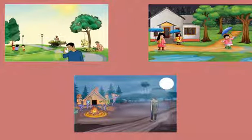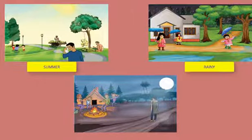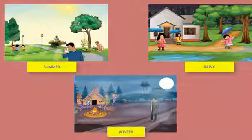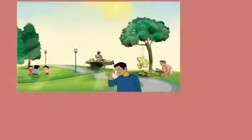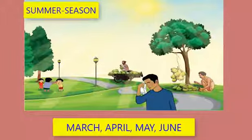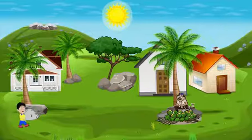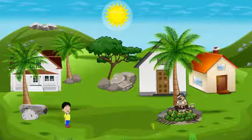My dear students, now we are going to learn about seasons in India. We have only three seasons — they are summer, rainy, and winter. March, April, May, and June are the summer months. In summer, the temperature is very high.